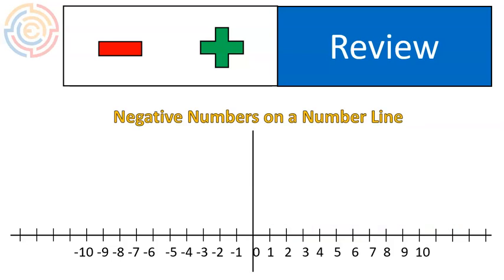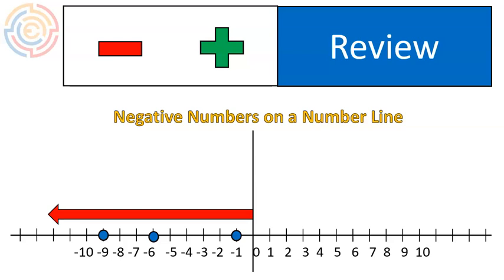On the other side, negative numbers on a number line look like this. They could be negative one, negative six, negative nine. We can represent that with a red arrow — everything left of that point. Everything left of zero on a number line is going to be a negative number. So: positive numbers are on the right, negative numbers are on the left. That's an important piece of background information before we move forward.